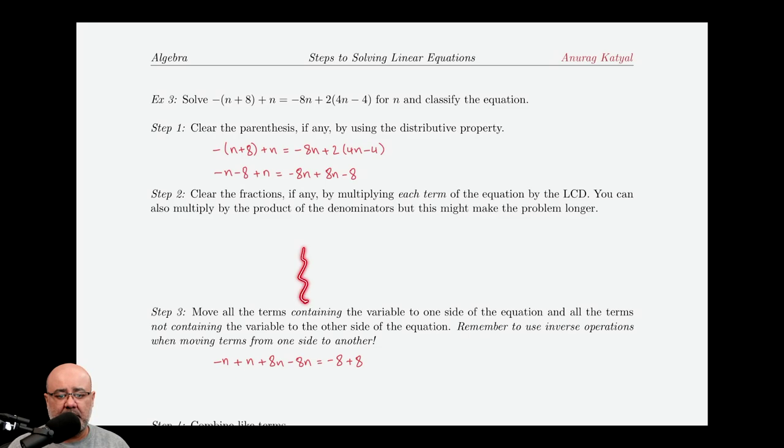There are no fractions, so we can skip ahead to step 3, and step 3 says get all the variables on one side of the equation, and all the non-variables onto the other side. We want to move all the n's. In this particular case, I move them to the left.